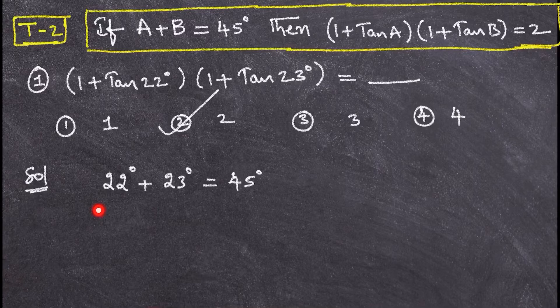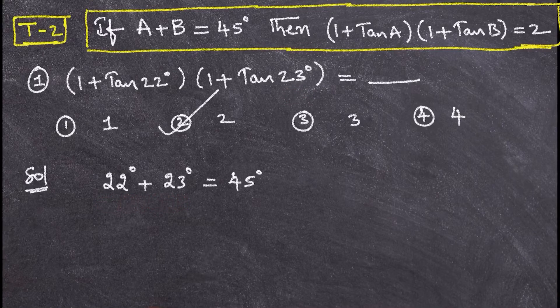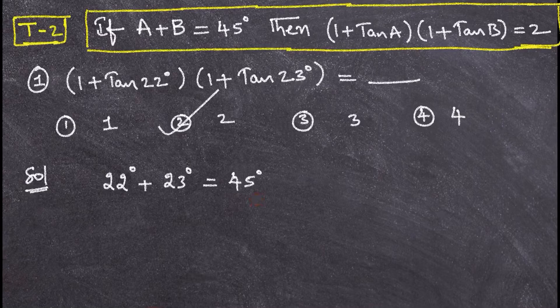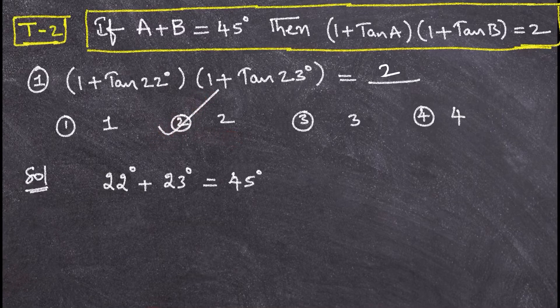Observe the solution. Here a is 22 degrees and b is 23 degrees. 22 degrees plus 23 degrees is 45 degrees, so a plus b is 45 degrees. Therefore (1 + tan a)(1 + tan b) = 2. The second option is the right option.